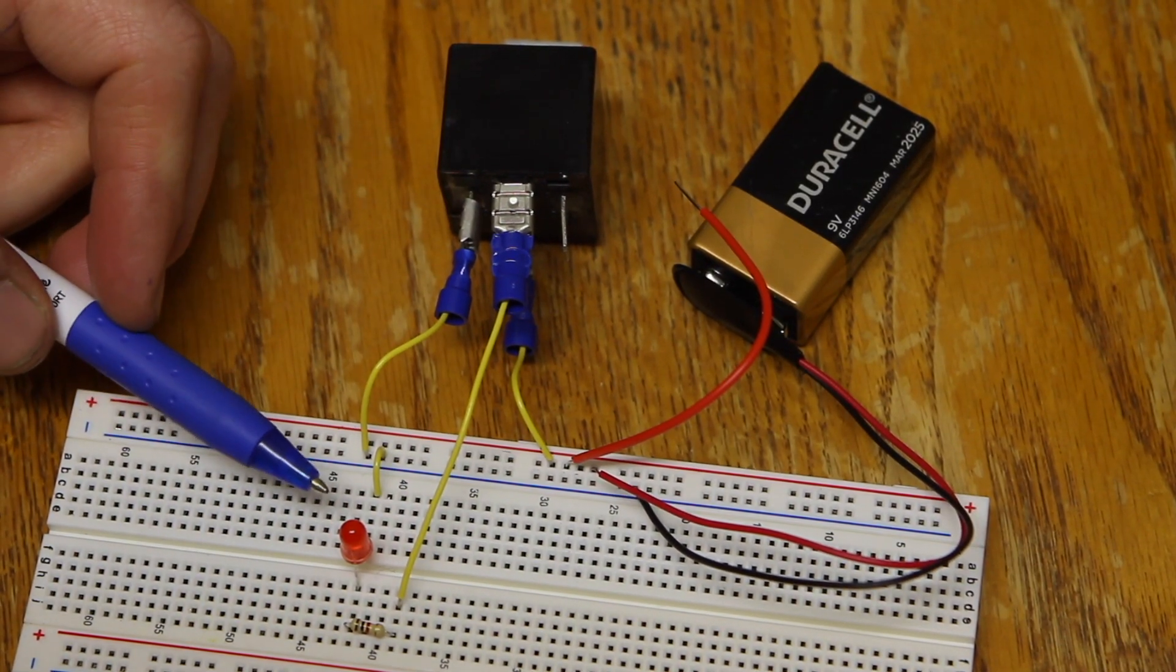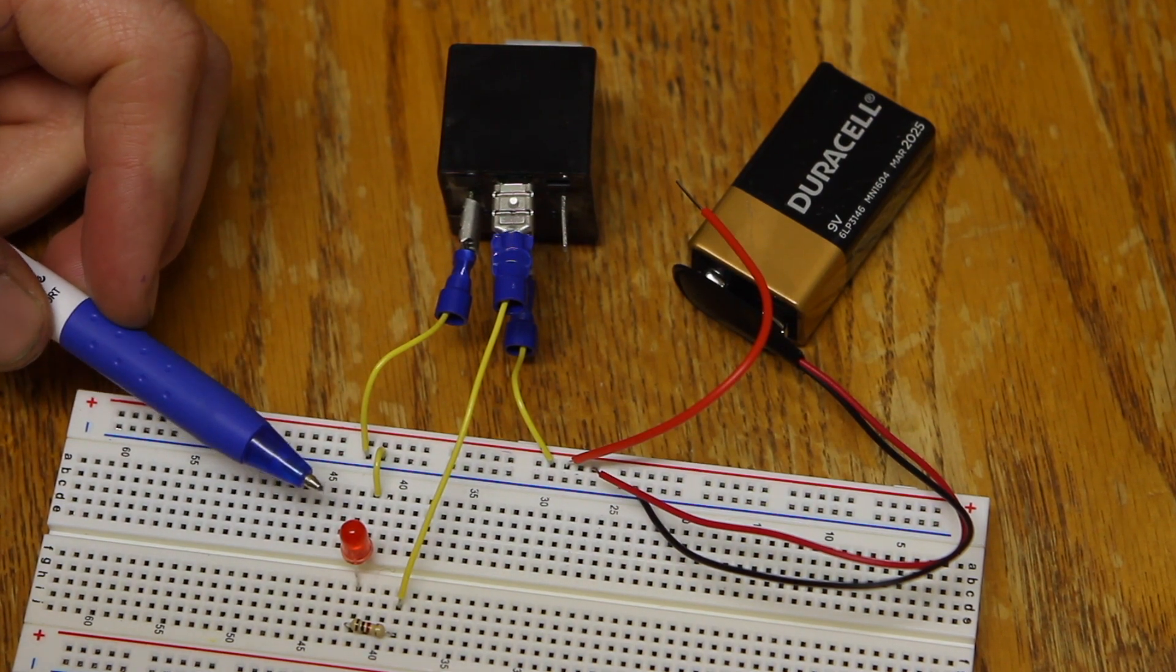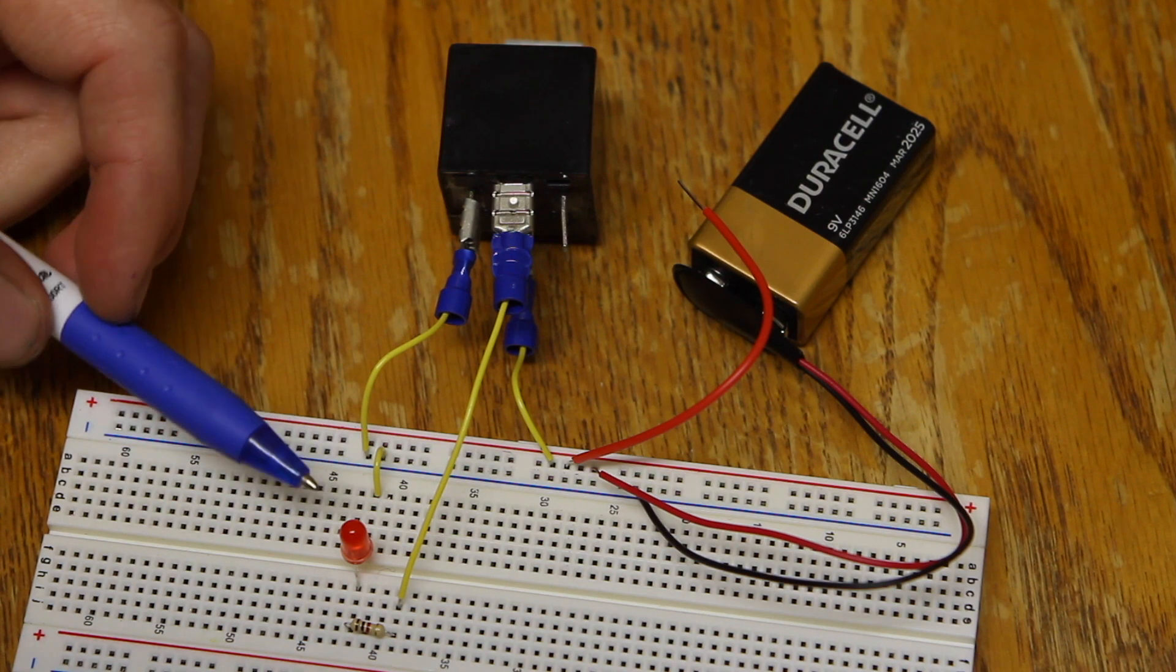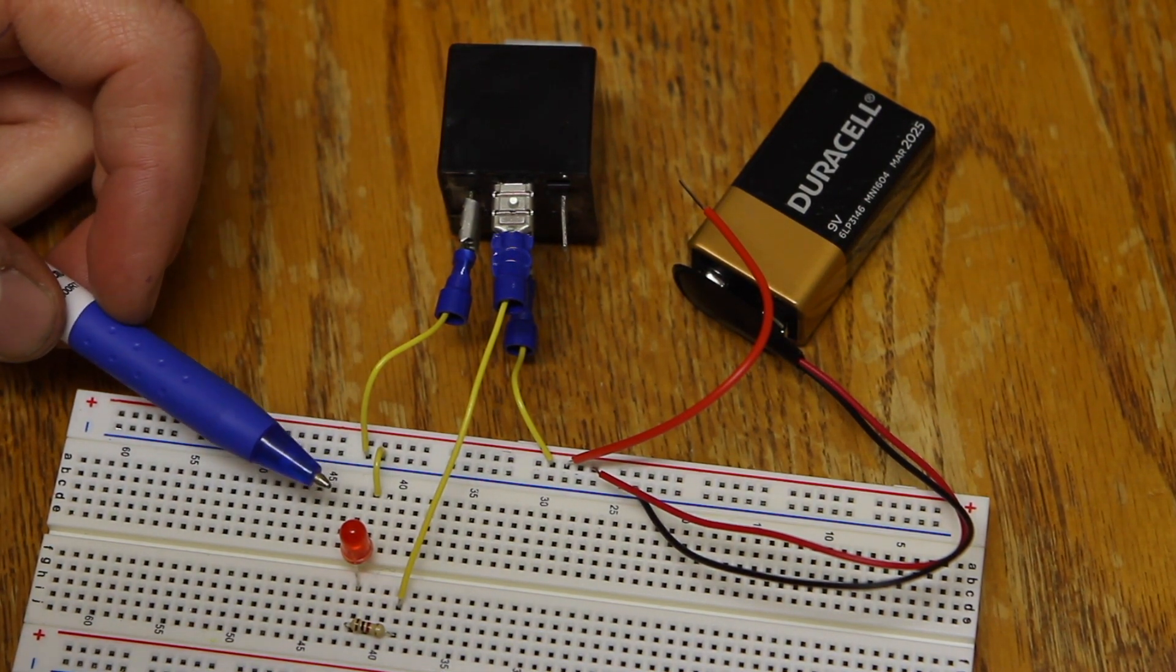This LED is just a representation of any accessory device. This could be your heated grips, your accessory lights, whatever it is. It's simply showing you that you're getting power flowing out of pin 87 on the relay.